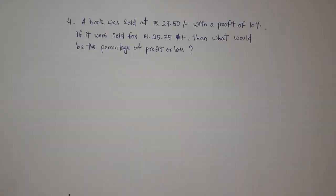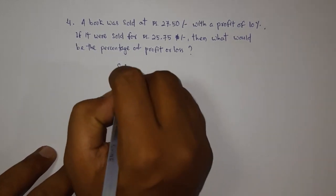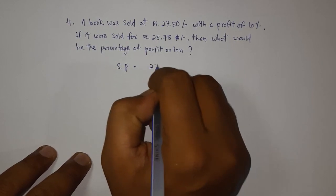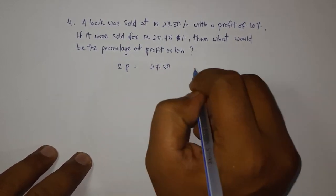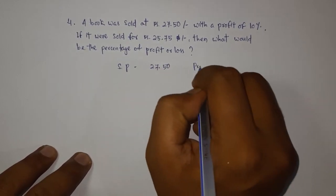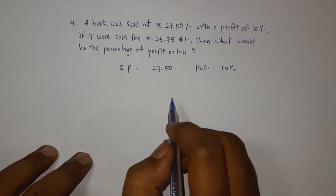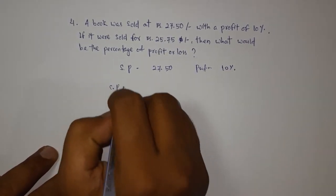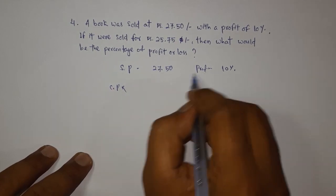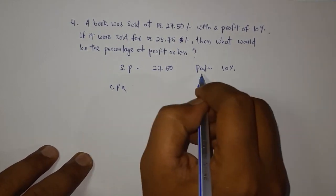Next question: a book was sold at Rs. 27.50 with a profit of 10%. If it were sold for Rs. 25.75, what would be the percentage of profit or loss? The selling price is 27.50 with a profit of 10%. If cost price is 100, then with 10% profit the selling price is 110.